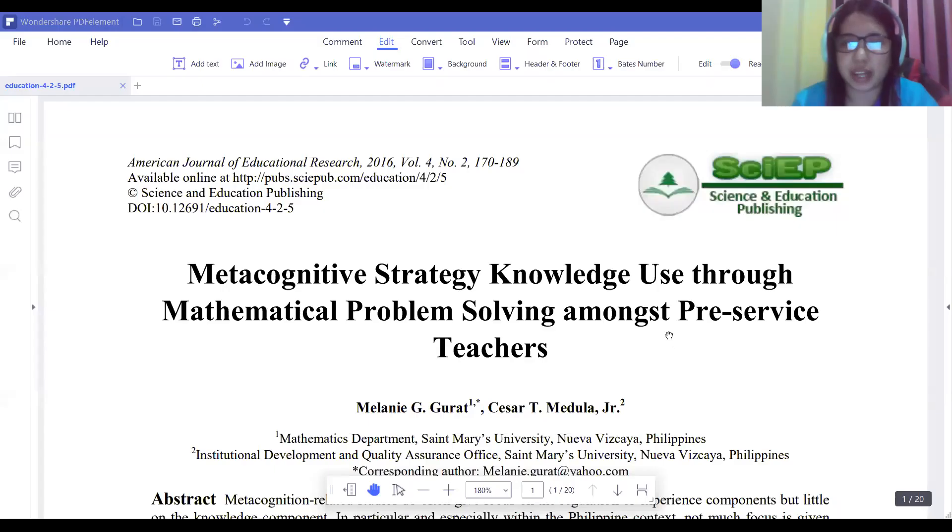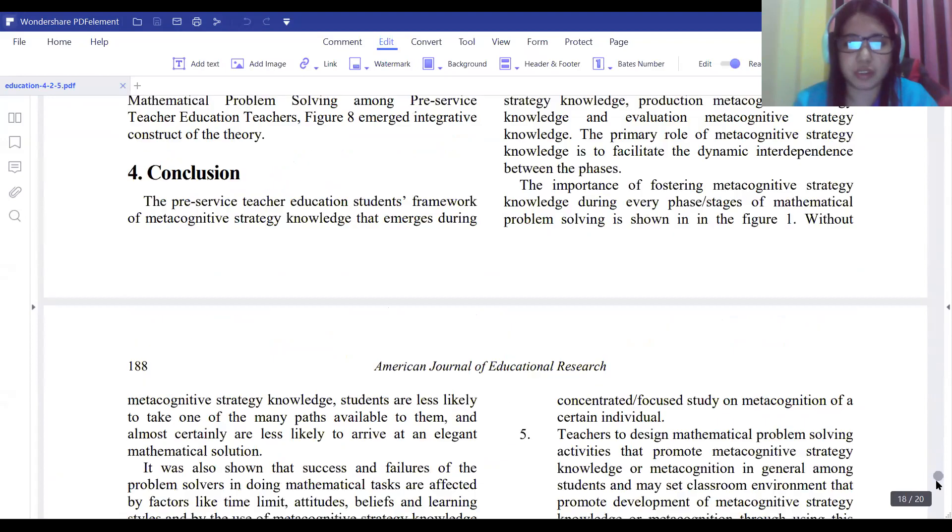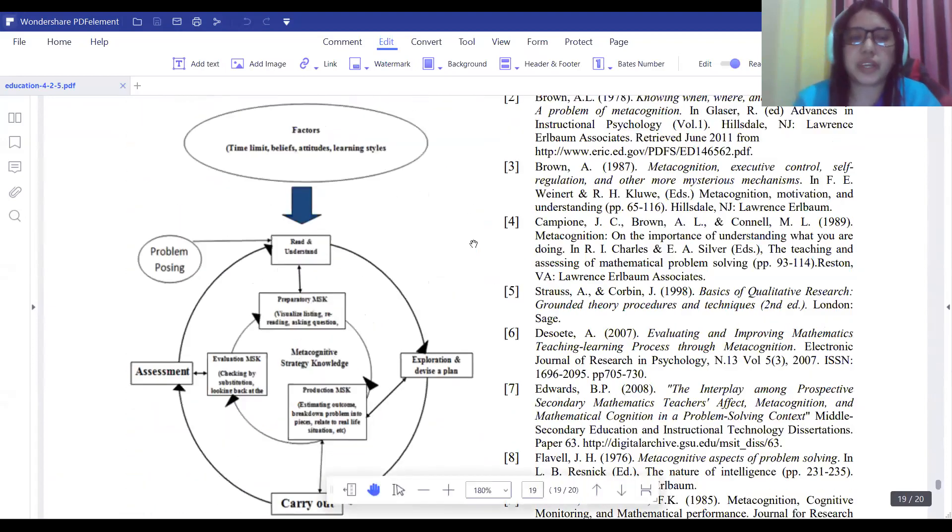Now, just to have a picture of this, let us consider a study on metacognitive strategy knowledge used through mathematical problem solving for preservice teachers. In this study, I was able to come up with a framework that looks like this. This shows a problem solving stage with the factors that affect the problem solving stages and the metacognitive strategy knowledge of a student.